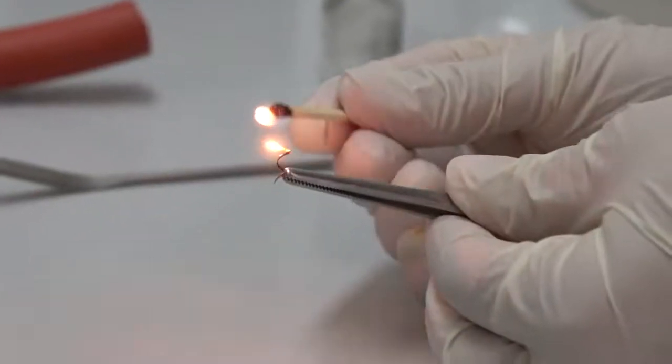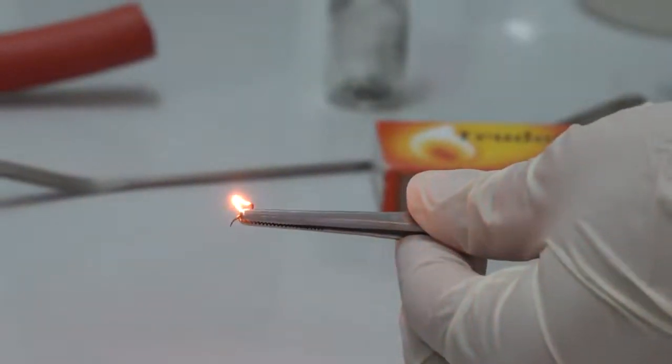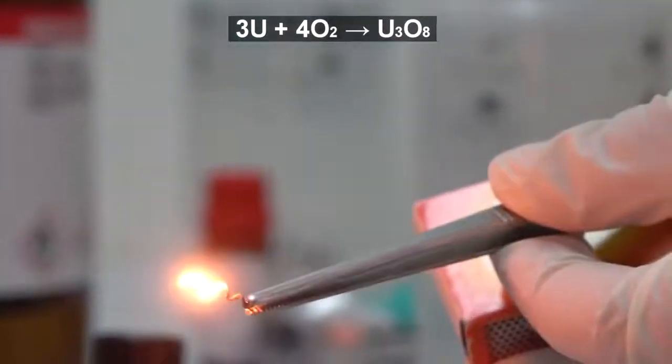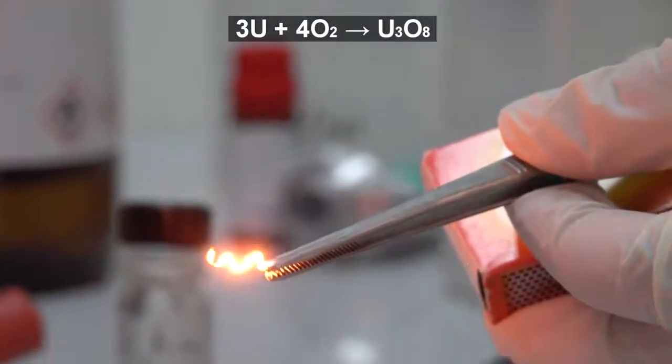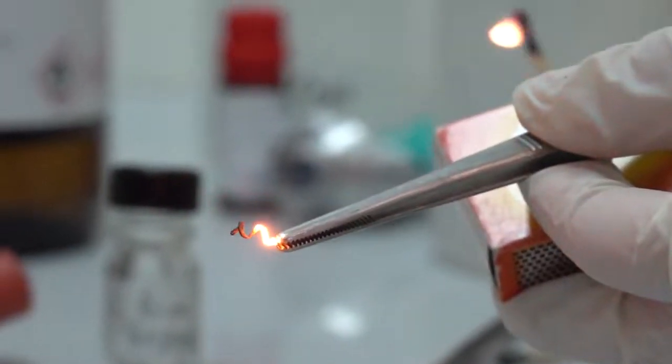Because of its high chemical activity, uranium shreds burn well in the air. For the first time on YouTube, you can observe how uranium burns and turns into its oxides. However, to conduct experiments, uranium is not just burned.